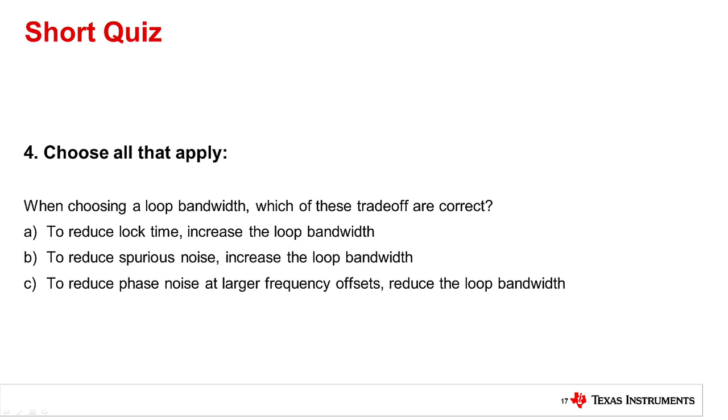The answer is A and C. So, when you increase the loop bandwidth, it will reduce the lock time. This one is true. Answer B is exactly the opposite. You would want to reduce the loop bandwidth to reduce the spurs.